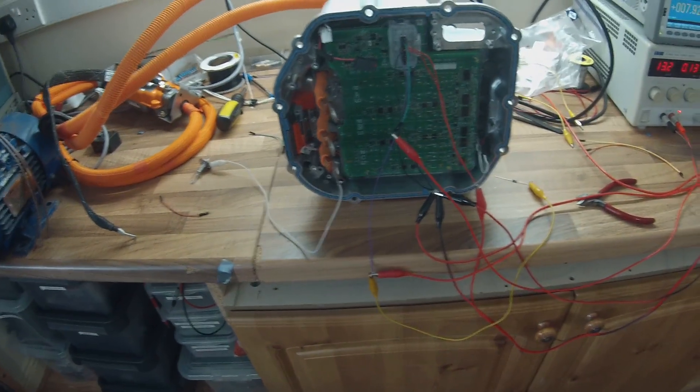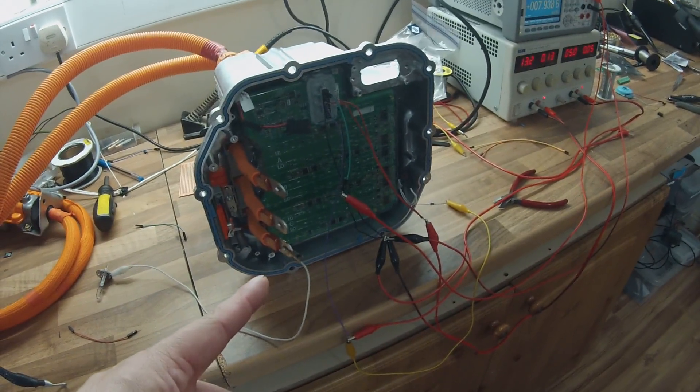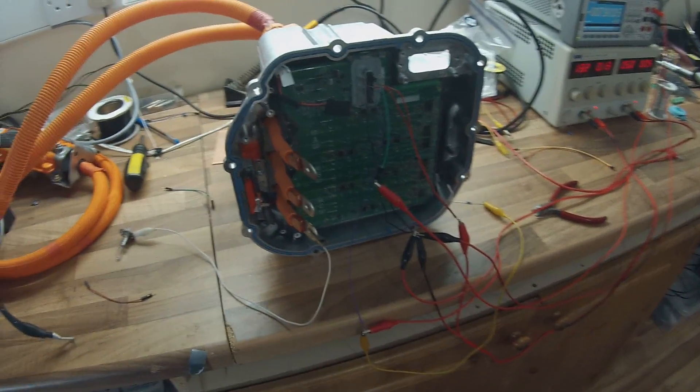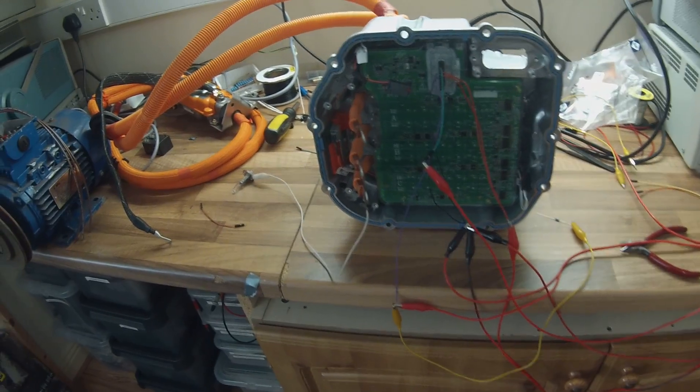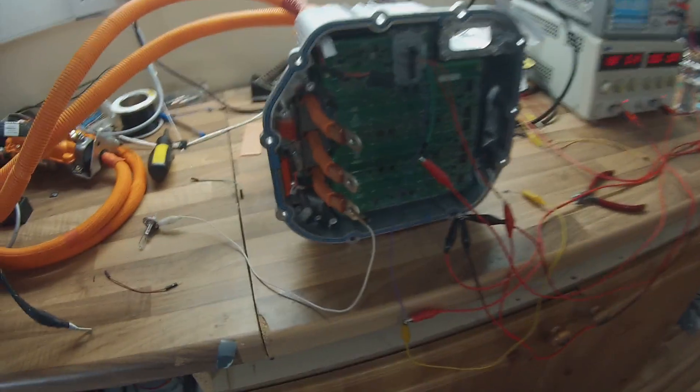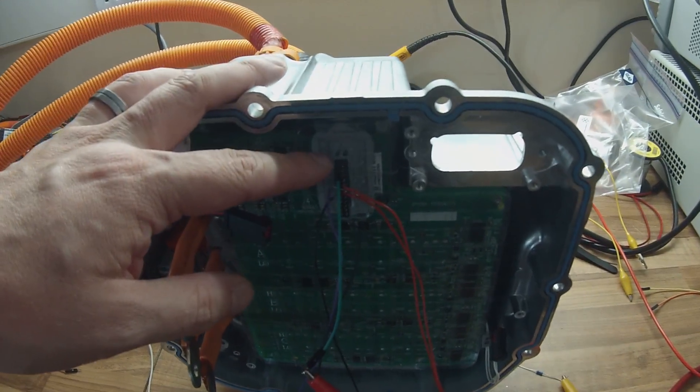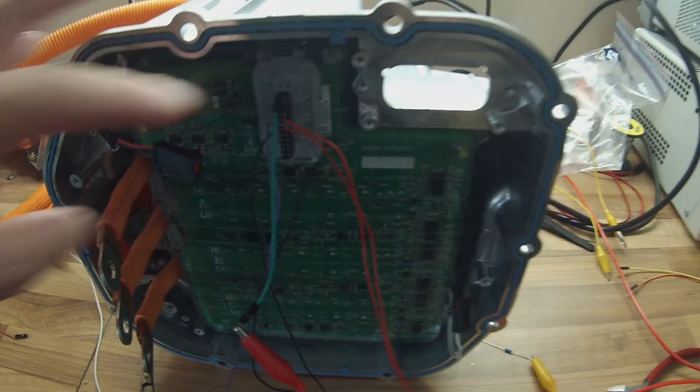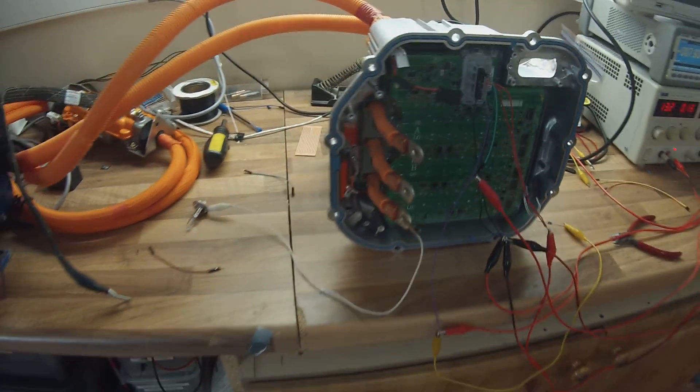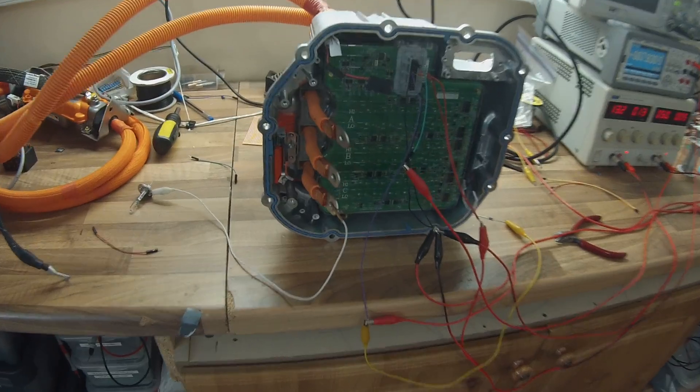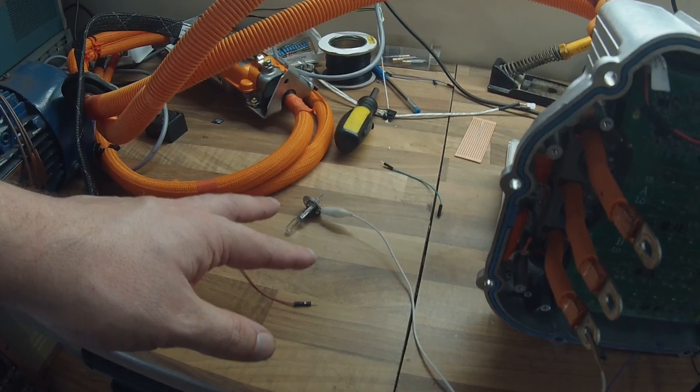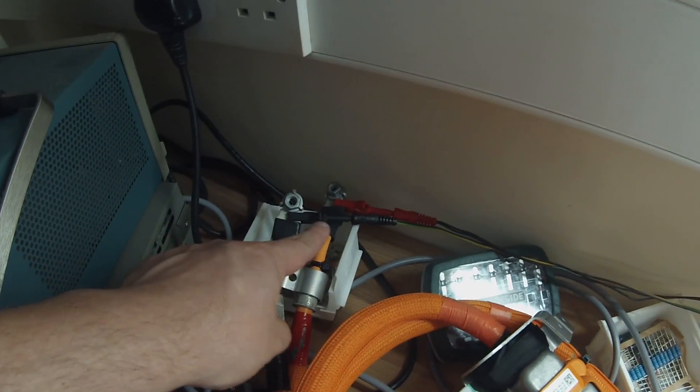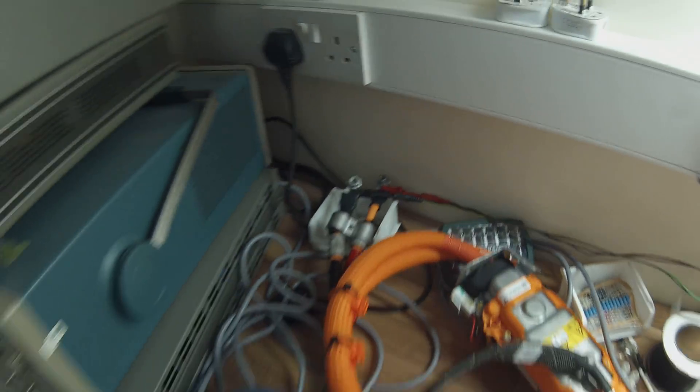All righty. So now that we know how to drive the IGBTs, the next thing we want to do is to be able to measure the DC bus voltage. Turns out that pin 1 here was giving me some interesting readings, so I decided to give that a bit of stimulus. What I've done is I've removed my power supply here from the headlamp and connected the power supply normally just to the plus and minus battery terminals.